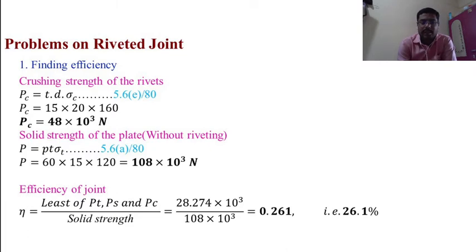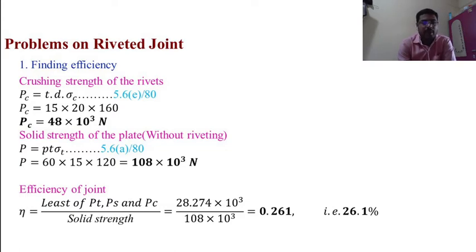Crushing strength of the rivet: Pc = t × d × σC — equation 5.6E, page 80. Pc = 15 × 20 × 160 = 48 × 10³ N.